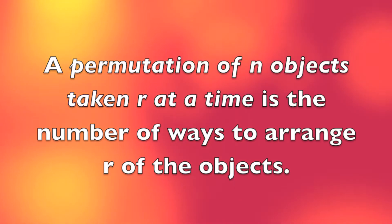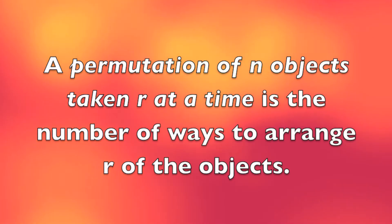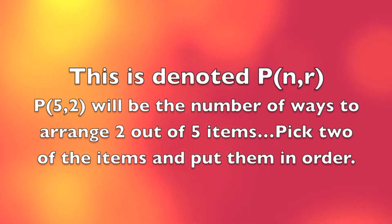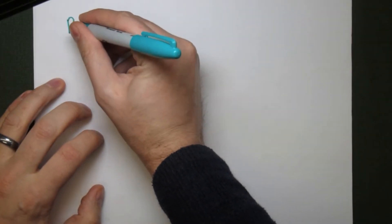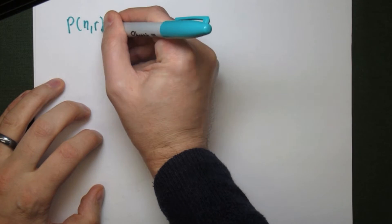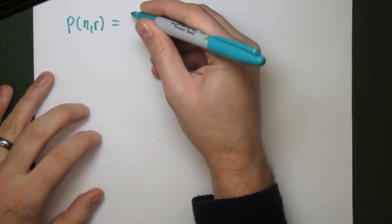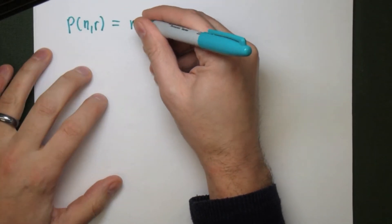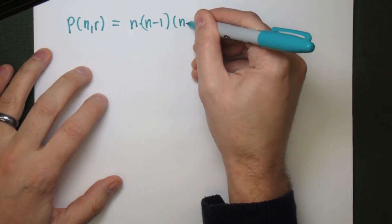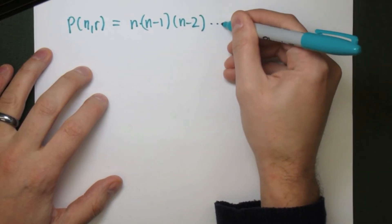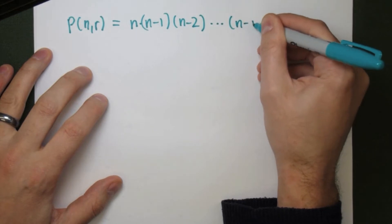A permutation counts the number of ways we can arrange a number of objects. P(5,2) will be the number of ways to take five items and arrange two of them — pick two and put them in order. There's a formula to compute permutations. In particular, P(n,r), which is n objects taken r at a time, is going to be n times n minus 1 times n minus 2 times n minus 3, all the way down to n minus r plus 1.